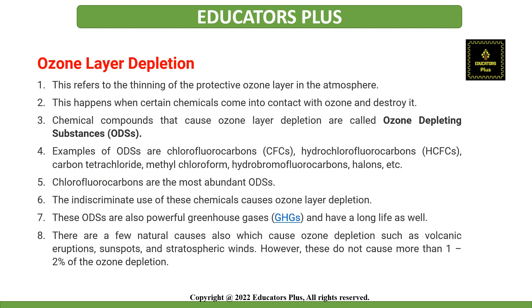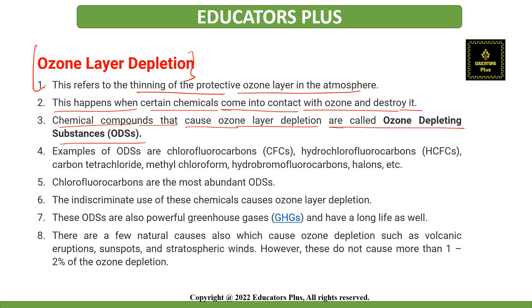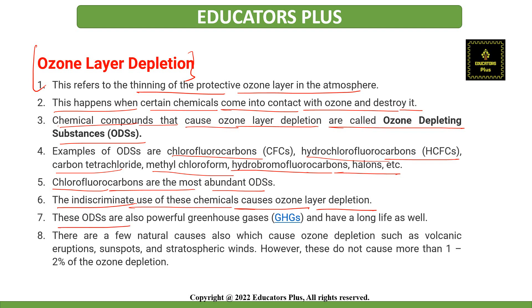Ozone layer depletion refers to the thinning of the protective ozone layer in the atmosphere. This happens when certain chemicals come into contact with ozone and destroy it. Chemical compounds which cause this are called ozone depleting substances (ODS). Examples include chlorofluorocarbons (CFCs), hydrochlorofluorocarbons (HCFCs), carbon tetrachloride, methylchloroform, hydrobromofluorocarbons, halons, etc. HCFCs are the most abundant ozone depleting substances. The indiscriminate use of these chemicals causes ozone layer depletion. ODS are also powerful greenhouse gases and have a long life. There are also natural causes such as volcanic eruptions, sunspots, and stratospheric winds, however these cause no more than 1–2% of ozone depletion.